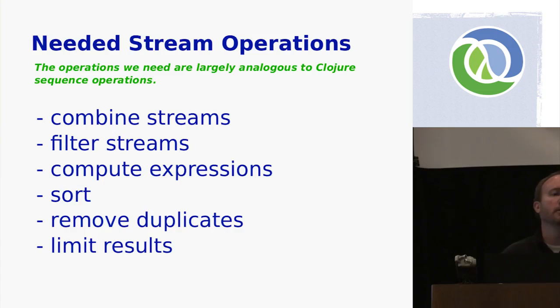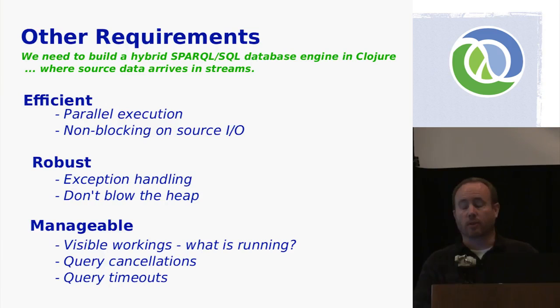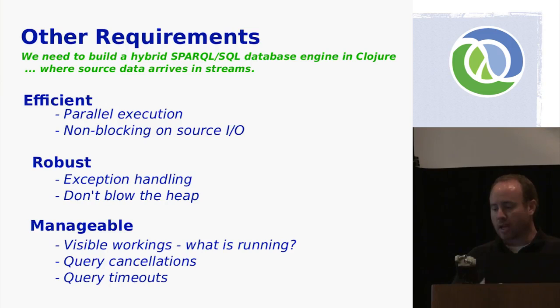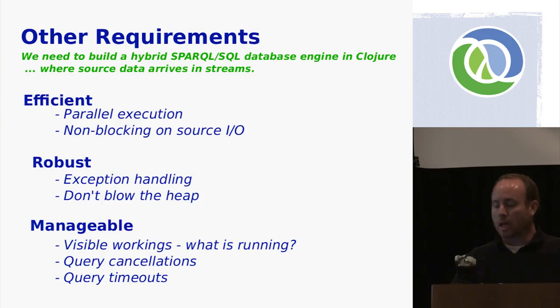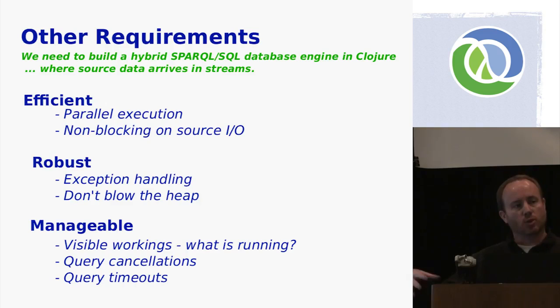The kinds of operations we need to do on these parallel data streams should look very familiar if you're familiar with Clojure sequence operations or database queries — they're somewhat universal data stream processing operations. We have non-functional requirements beyond basic processing: good exception handling, making sure that as we process very large streams too large to fit into memory we don't blow the heap, and a visible-workings aspect — you can see what processing is running, how much data is flowing through different nodes, and you can have user-initiated or system-initiated cancellations. It's really like building a database engine in Clojure, except the sources of data are themselves data streams coming in from underlying databases.